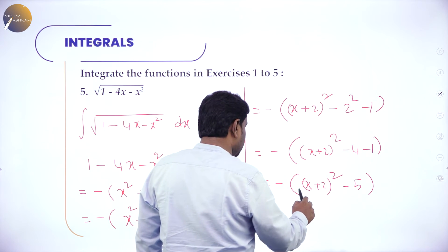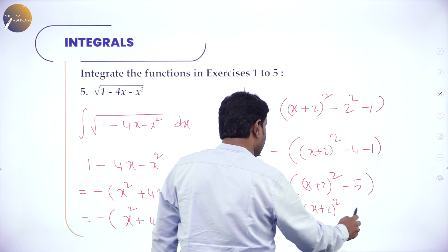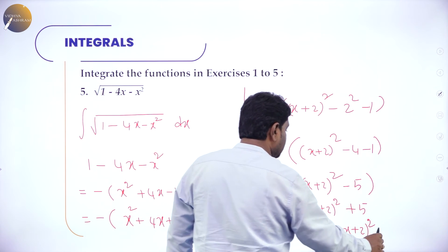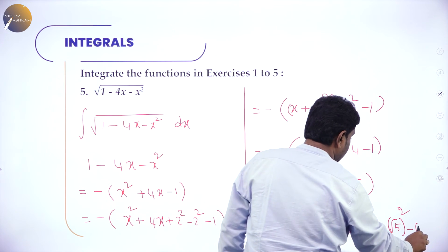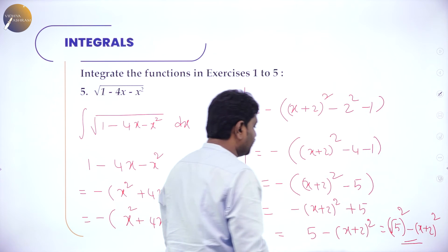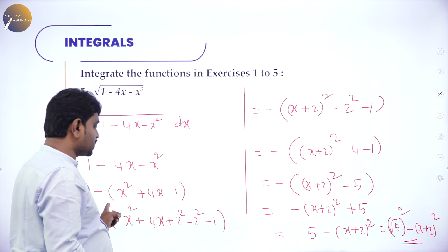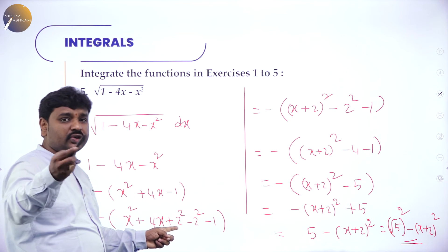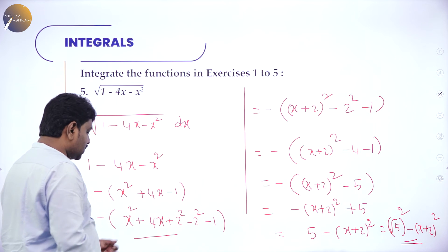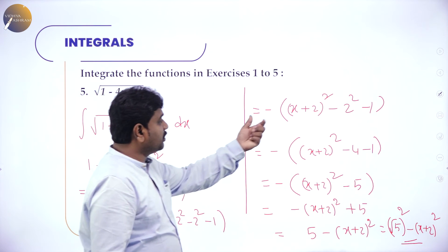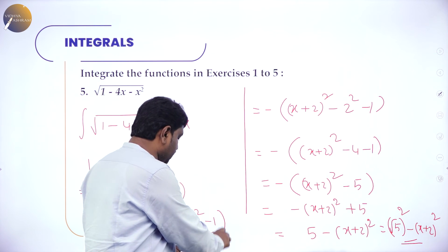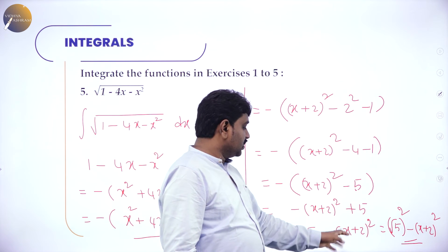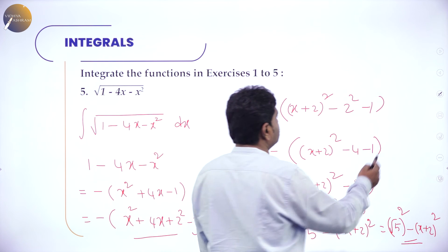So x² + 4x - 1 = (x+2)² - 4 - 1 = (x+2)² - 5. With the minus outside: -([(x+2)² - 5]) = 5 - (x+2)² = (√5)² - (x+2)². Always the coefficient of x² should be negative; taking minus inside gives (√5)² - (x+2)².